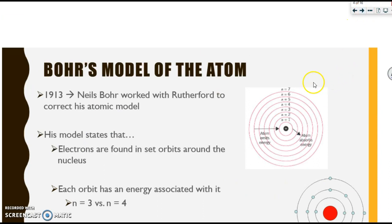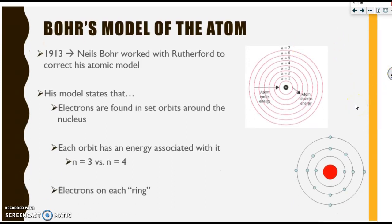Let's do a review of a Bohr model. These are very commonly taught in integrated science classes in high school. In 1913, shortly after Rutherford discovered the nucleus, Niels Bohr worked with him to correct the model. Bohr's model states that electrons are found in set orbits around the nucleus, kind of like the planets around the sun.